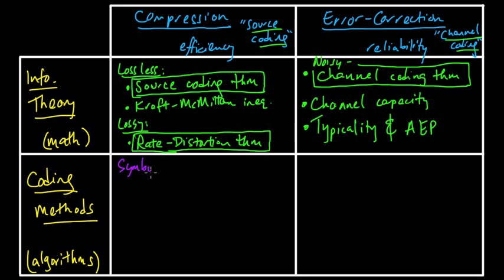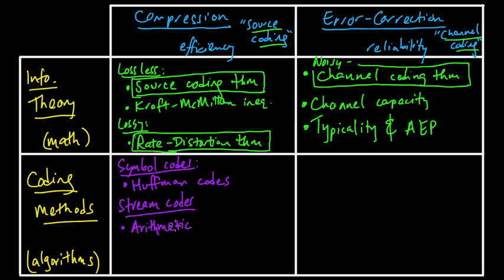So under compression, for coding methods, we have symbol codes, and the most important one is the Huffman code or Huffman codes. And then we also have stream codes, and perhaps the two most important stream coding methods to date are arithmetic coding and the Lempel-Ziv method, it's a very fun one to say, Lempel-Ziv. So these are coding methods, these are algorithms for compression, and they have many, many applications.